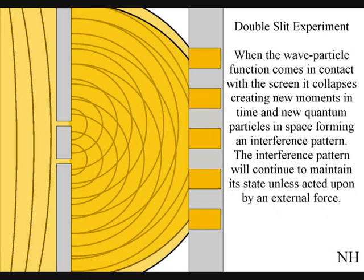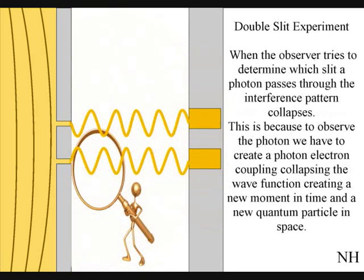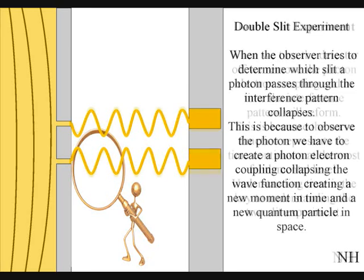When the observer turns on a detector to determine which slit a photon passes through, the interference pattern will collapse. This is because to observe the photon, we have to create a photon-electron coupling, collapsing each wave-front into a new quantum particle that will have its own position in space and time.